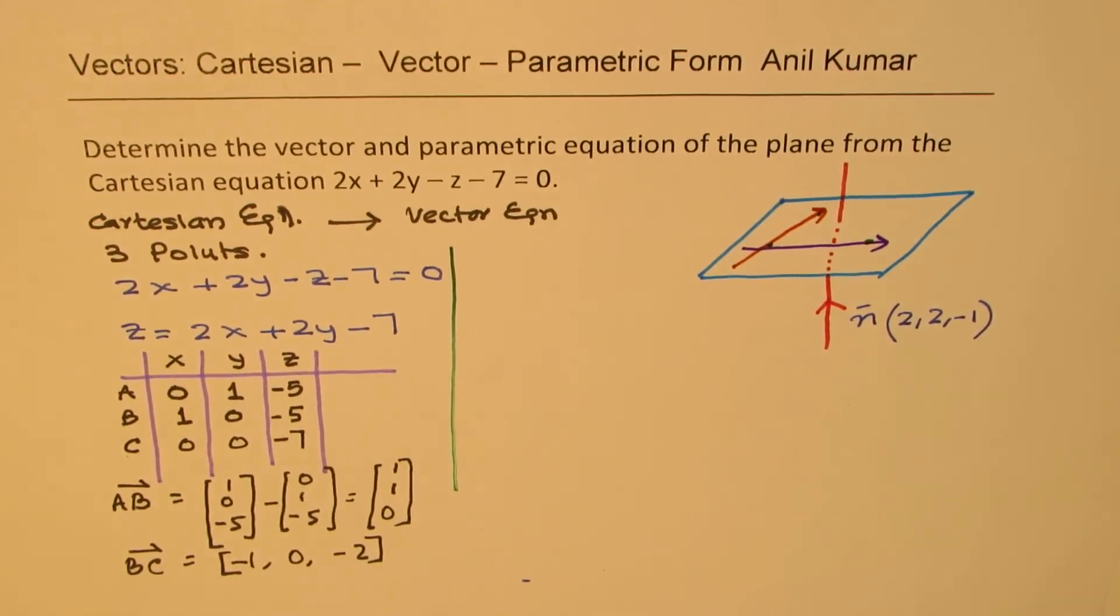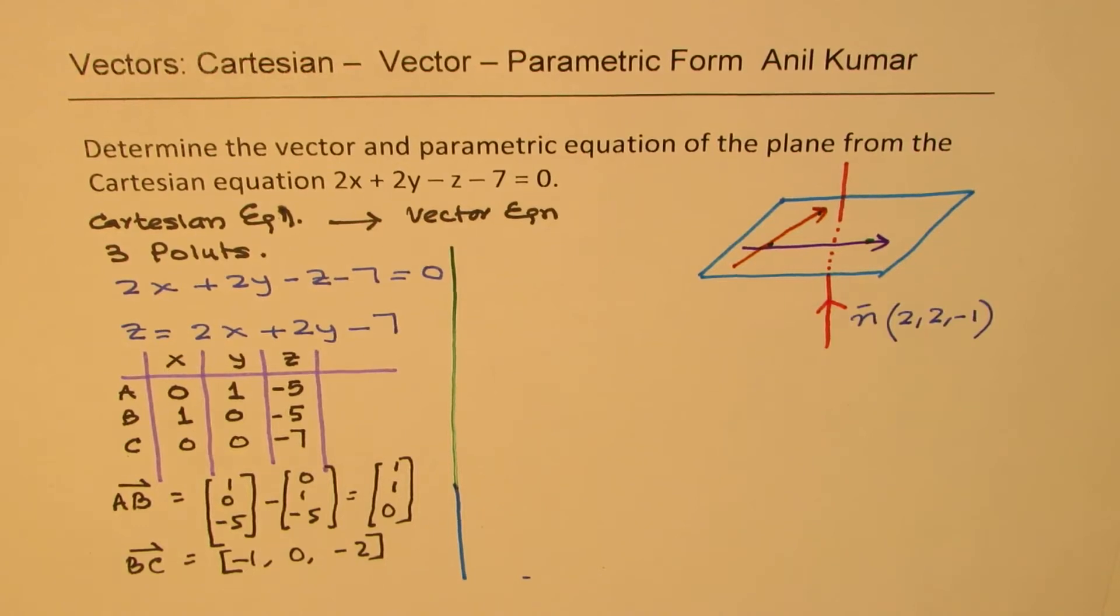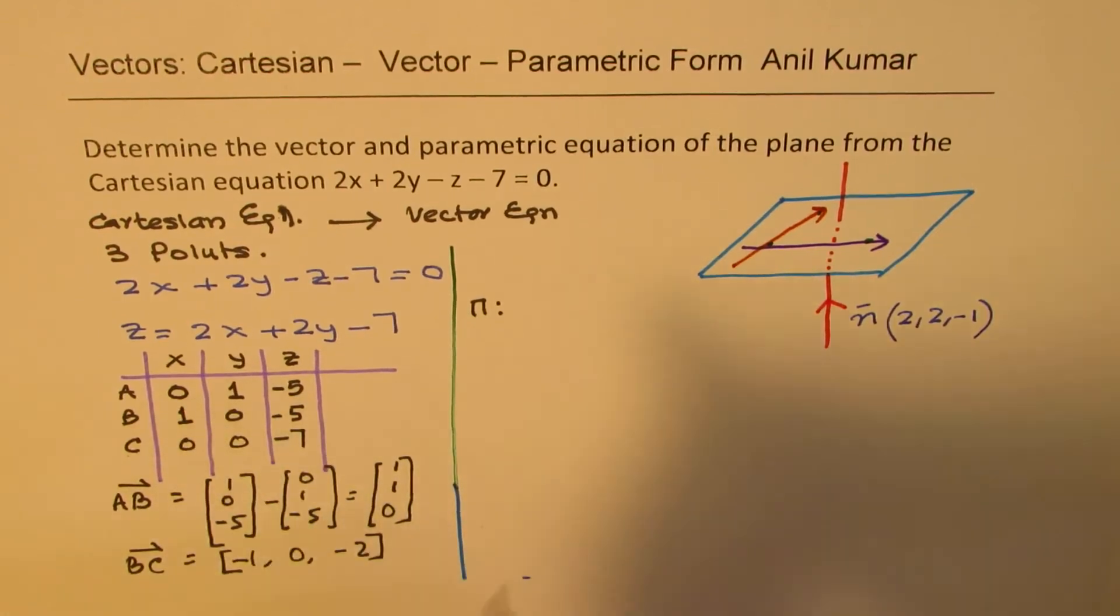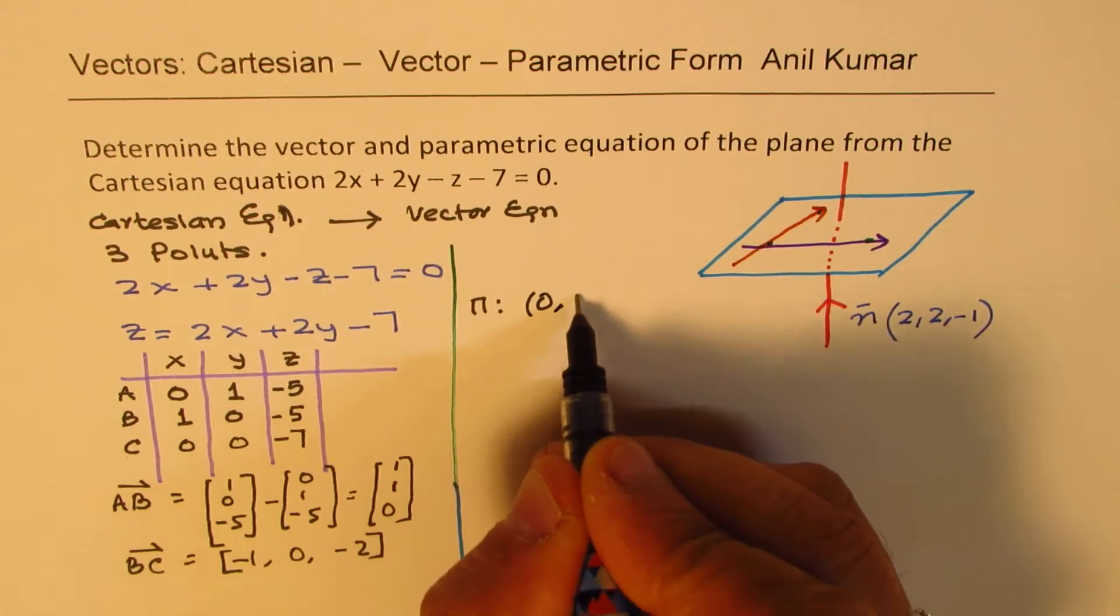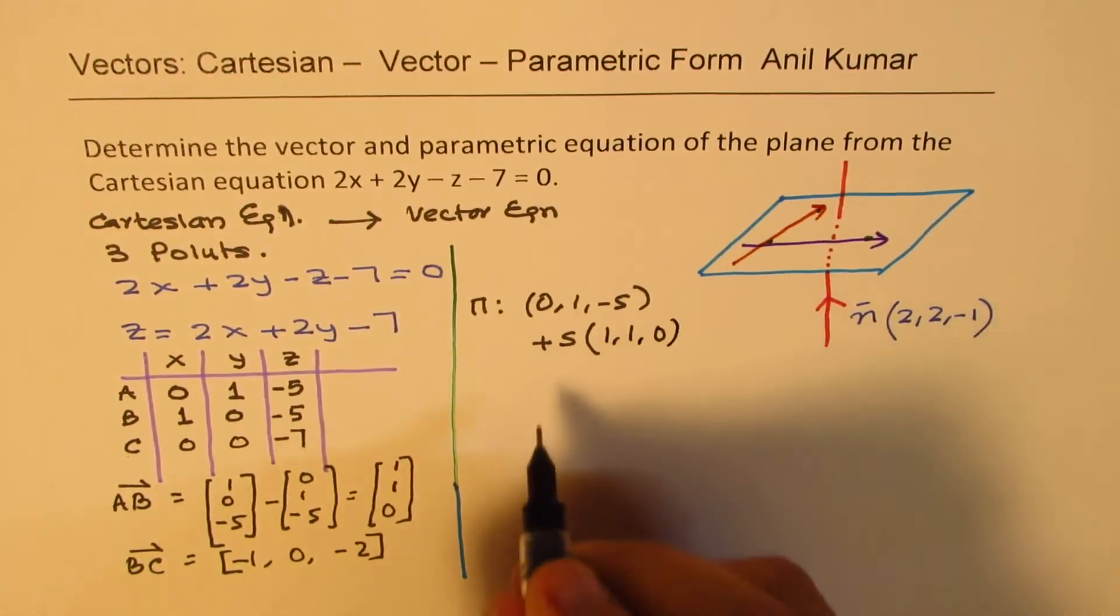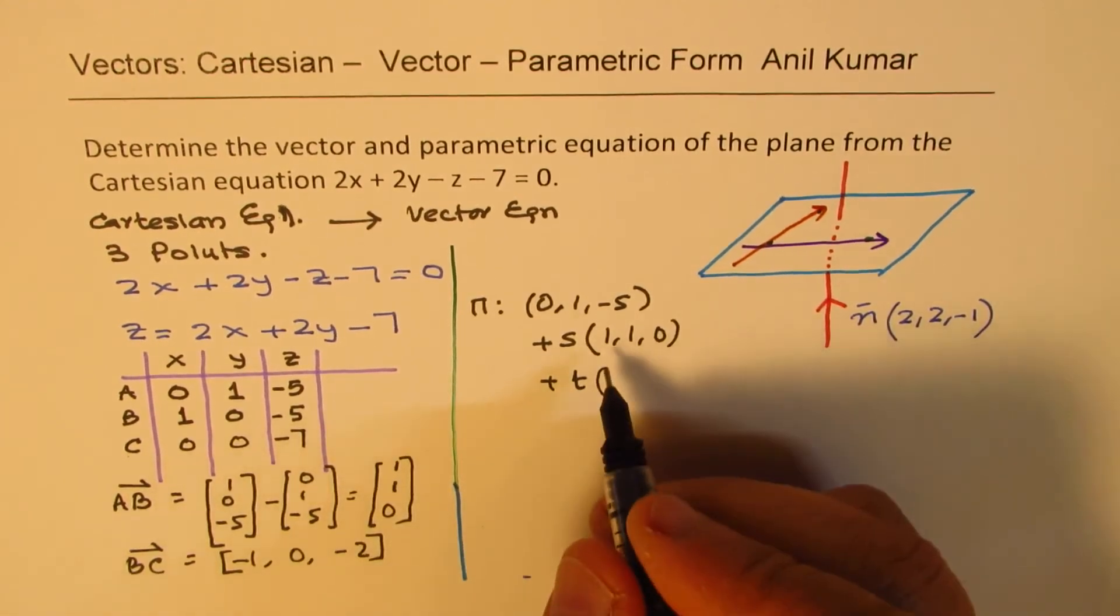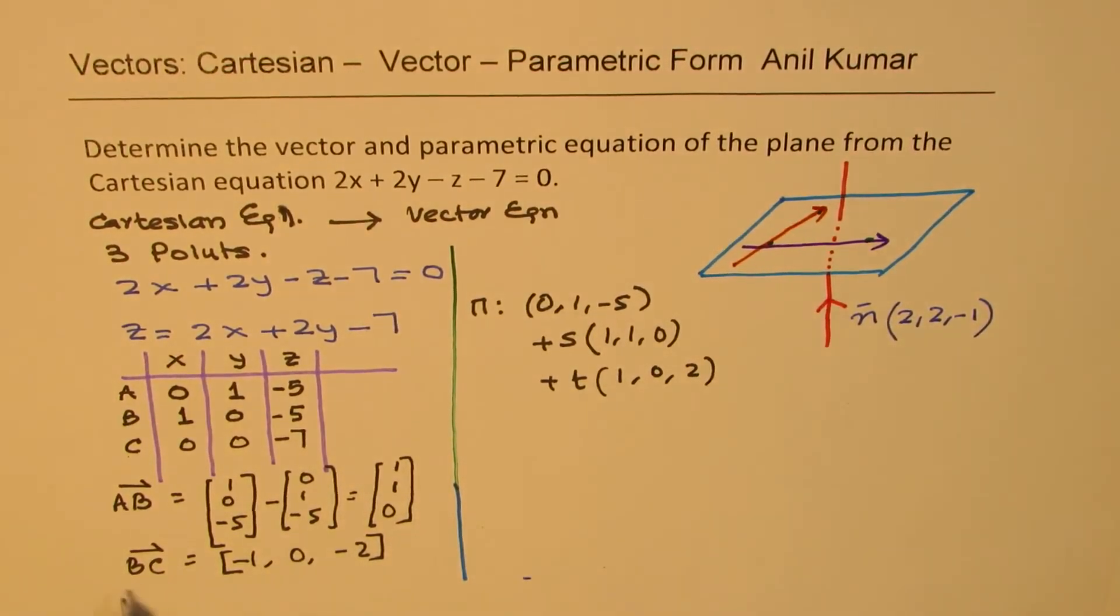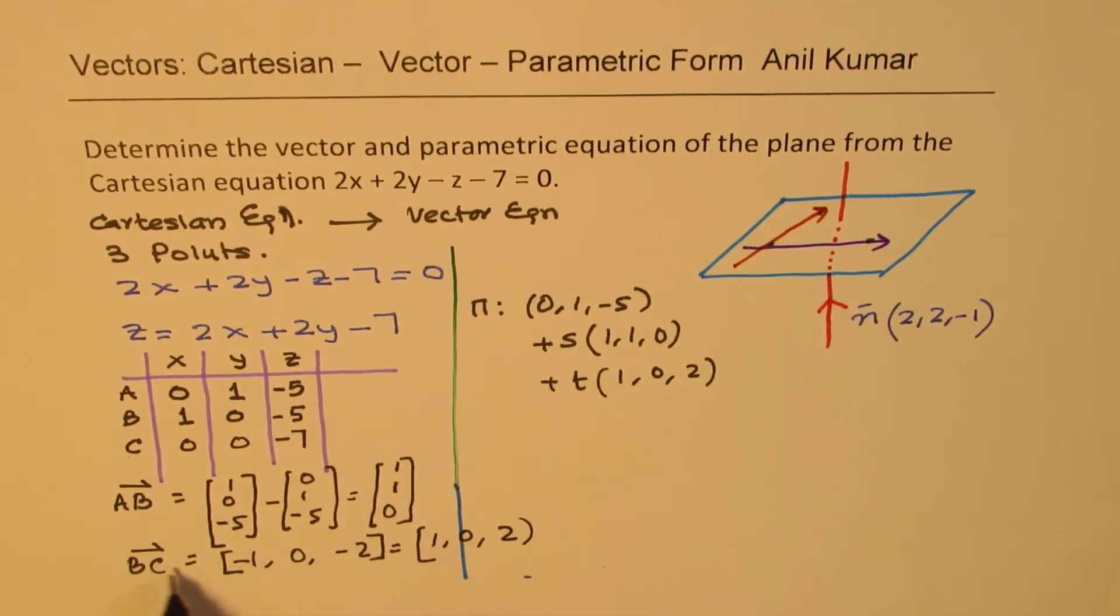I could have written this as c to b also. Now, with these two directions, I'm in a position to write down the vector equation. So, the vector equation for this particular plane will be, we can use one of our points, which is 0, 1, minus 5. And we'll use a parameter. So, we'll say plus s times one of the directions, which is 1, 1, and 0, plus t times the other direction, which I could also write as 1, 0, 2.